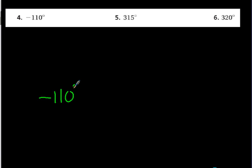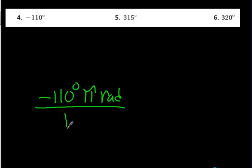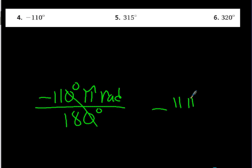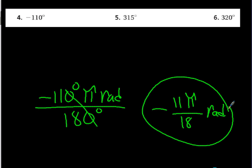Number 4: negative 110 degrees times pi radians over 180 degrees. I know the answer is going to be negative. 11 over 18 — 11 is prime so it doesn't simplify — so it's negative 11π/18 radians. Notice I haven't used a calculator yet; I'm not approximating with decimals.